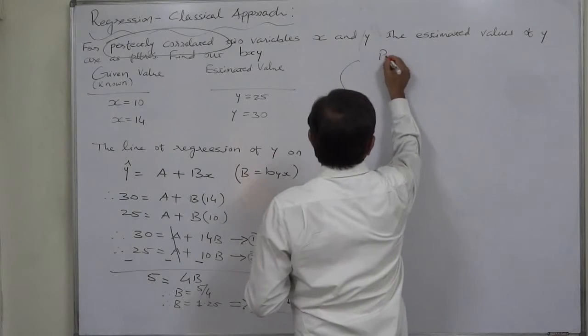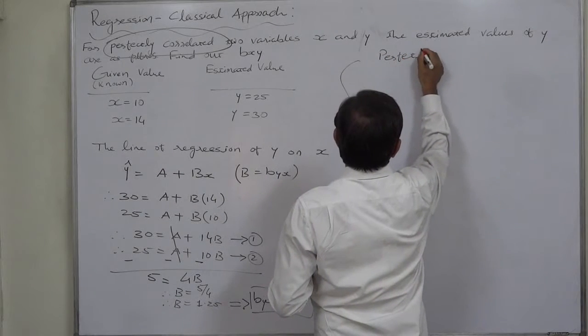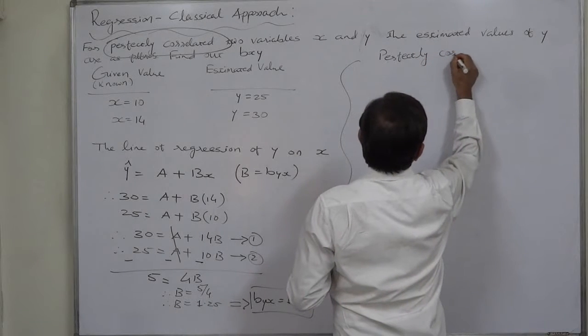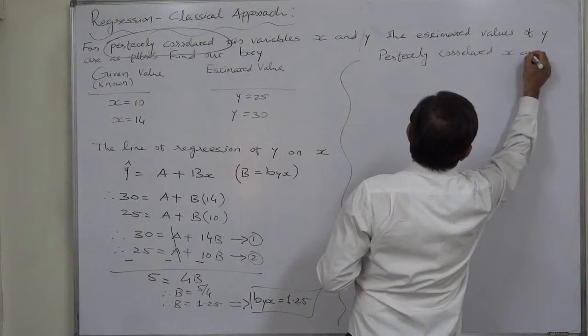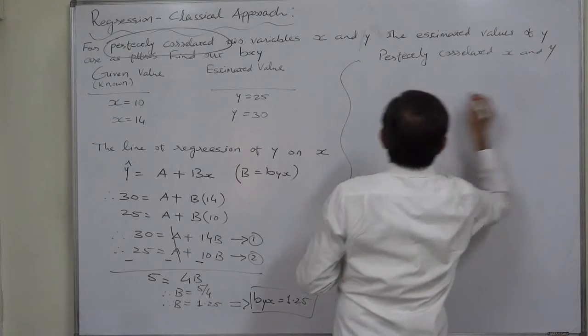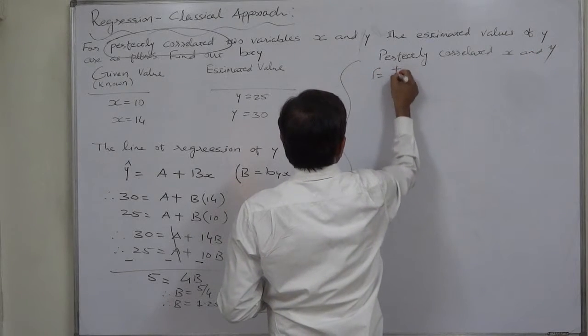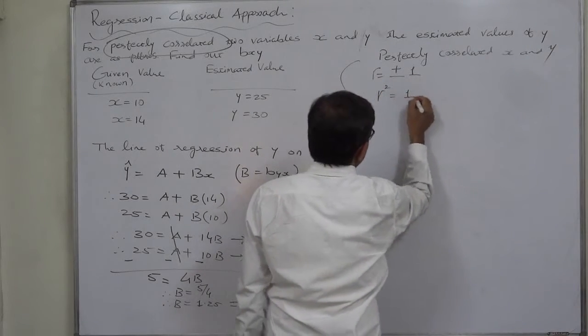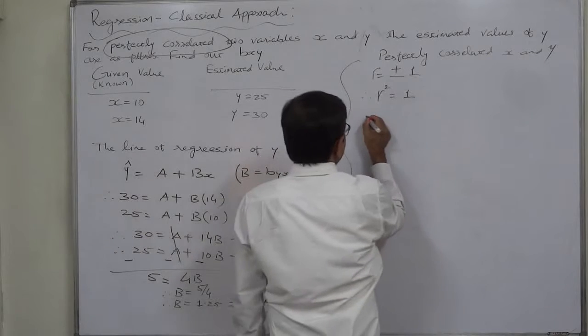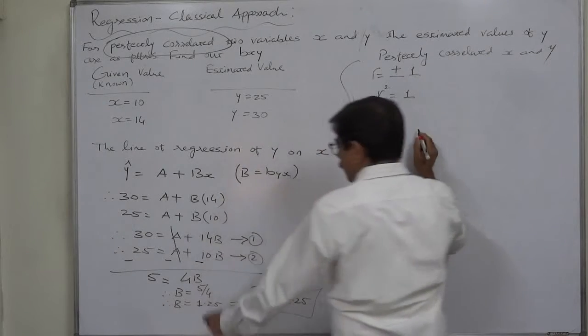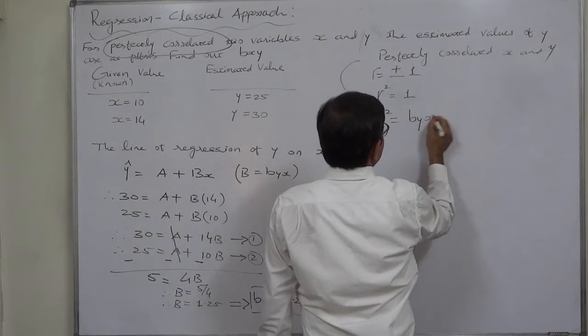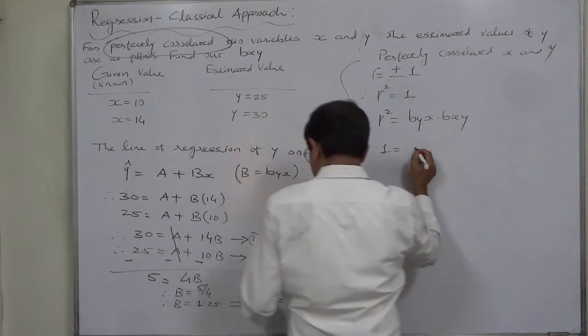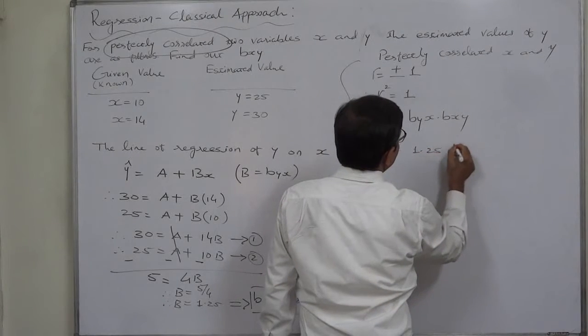Perfectly correlated. The meaning is coefficient of correlation is plus or minus 1, or more precisely the squared value of coefficient of correlation is 1. Now, we know that the squared value of coefficient of correlation is equal to b y x into b x y. That means 1 equals to 1.25 b x y.